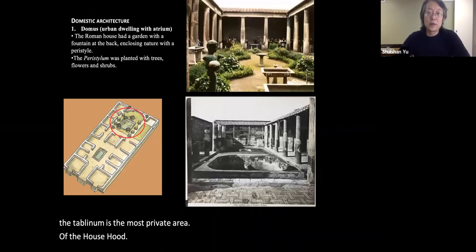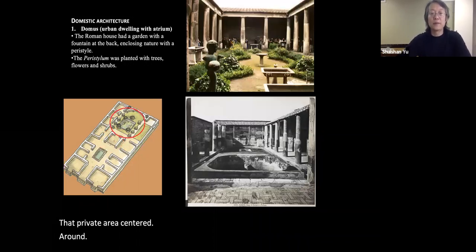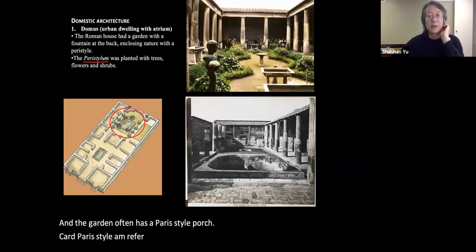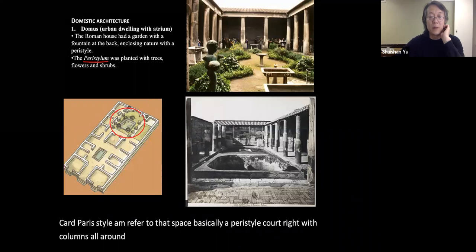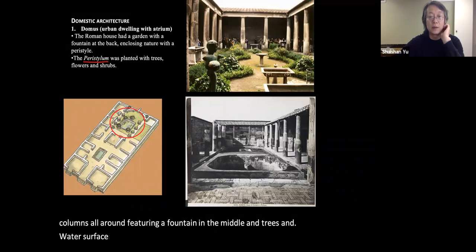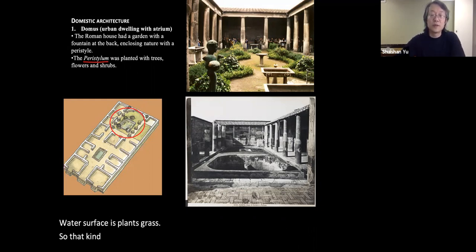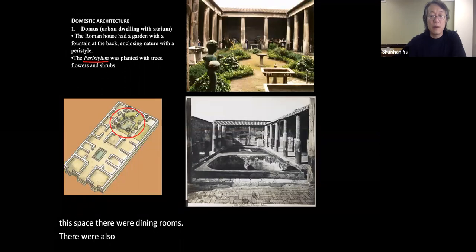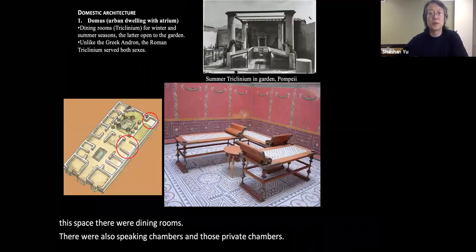The private area centered around a garden, and the garden often had a peristyle porch — basically a peristyle court with columns all around, featuring a fountain in the middle, trees, water surfaces, plants, and grass. This internal green area is known as the peristyle. Around this space were dining rooms and sleeping chambers.